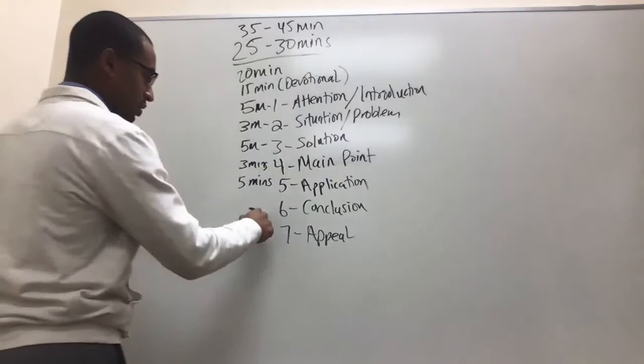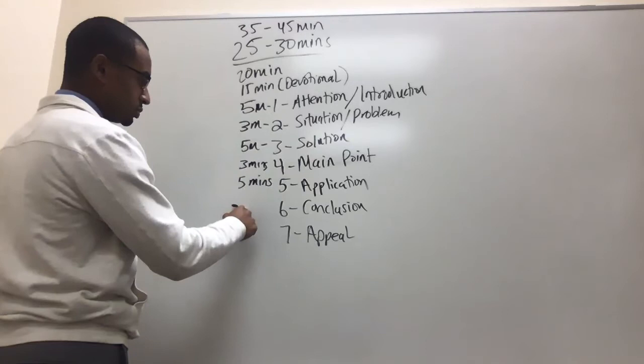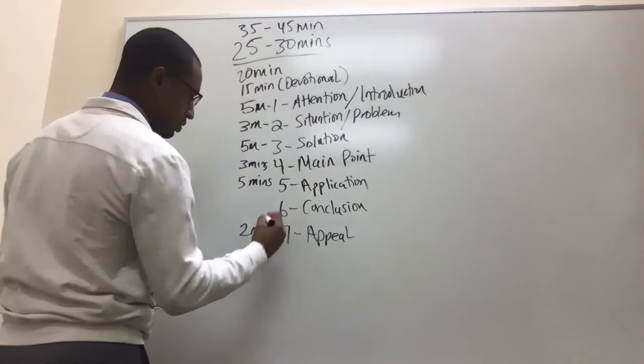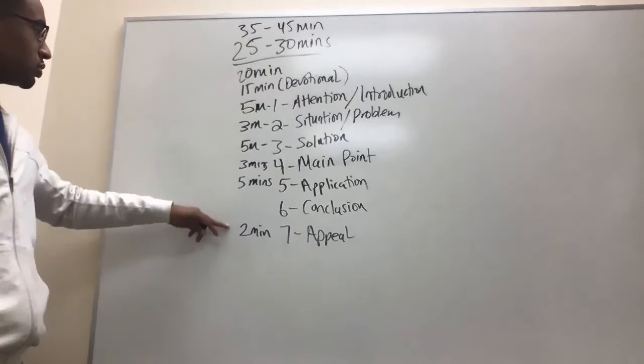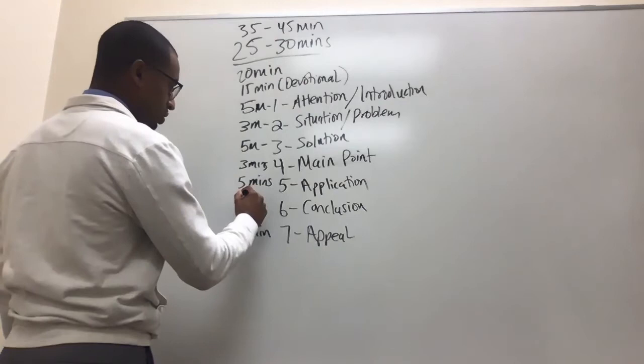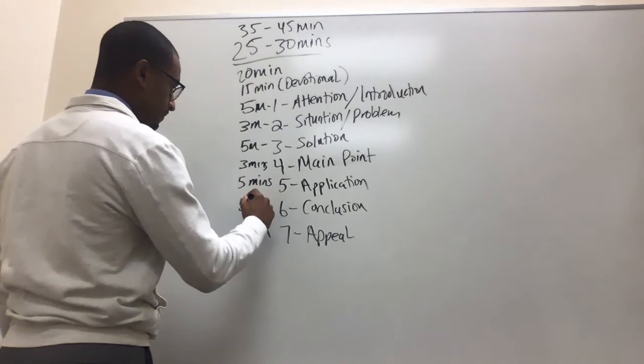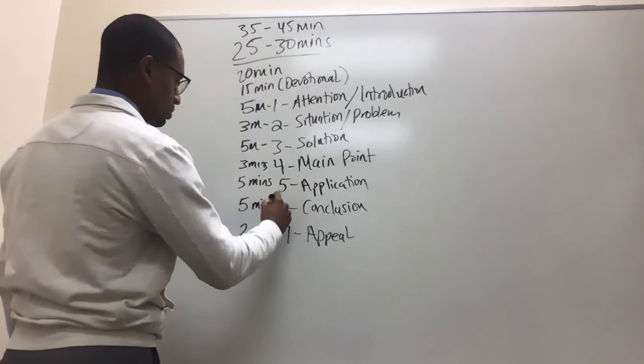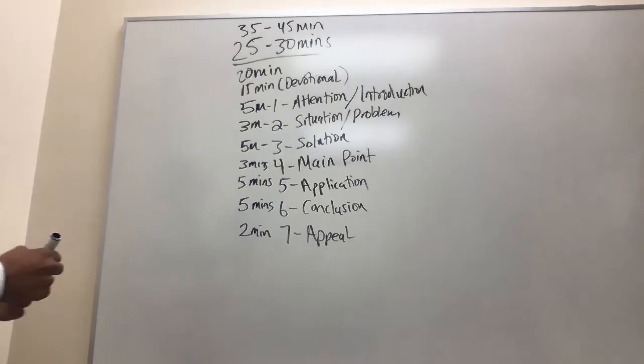So now that's 5, 10, 15, plus 6 — 21 minutes. The conclusion you want to wrap everything up. The appeal you can make a 2 minute appeal, and then the conclusion to wrap everything up — that's about 5 minutes. So we're looking at around 28 minutes total, which equals around 25 to 30 minutes.